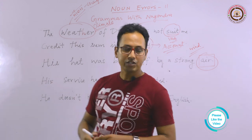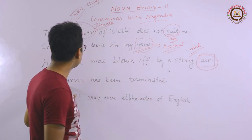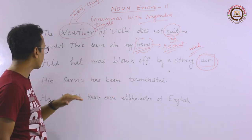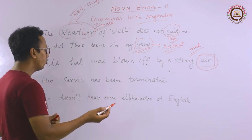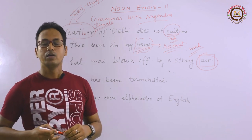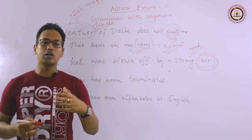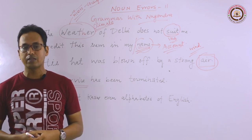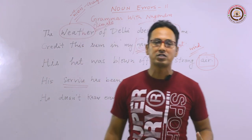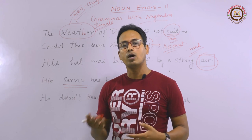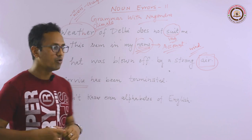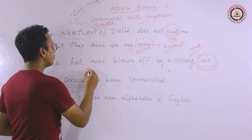Now the fourth sentence: 'His service has been terminated,' meaning he has been removed from his job. If we look at the noun here, we have the word 'service.' This word has been absorbed into us from our local dialect and general conversation — we hear 'government service,' 'private service.' But basically there is no noun called 'service' for a job — it is always used as 'services.'